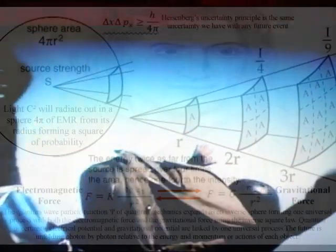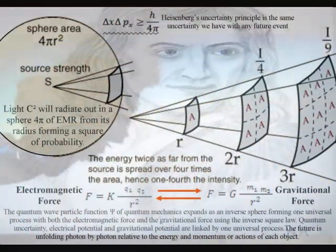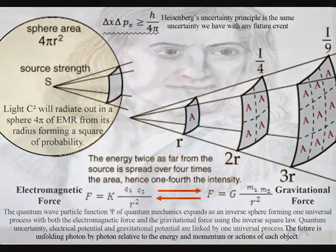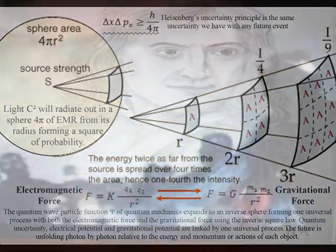This can be supported mathematically, with both the electromagnetic force and the gravitational force sharing the inverse square law, representing the dynamic geometry of one universal process.